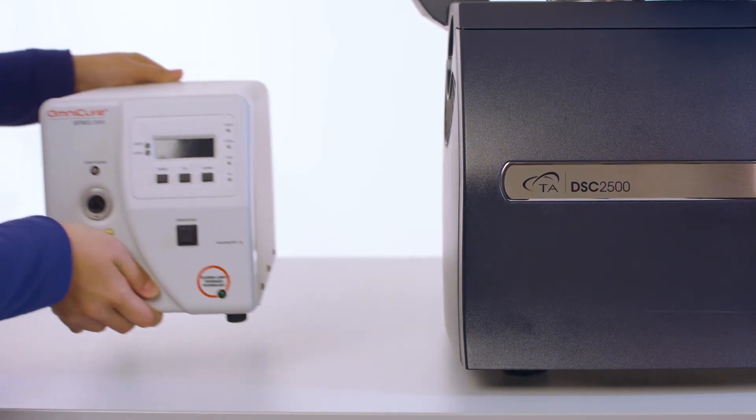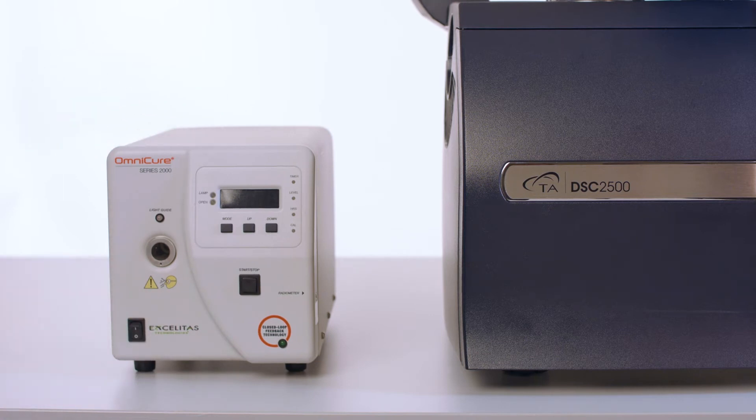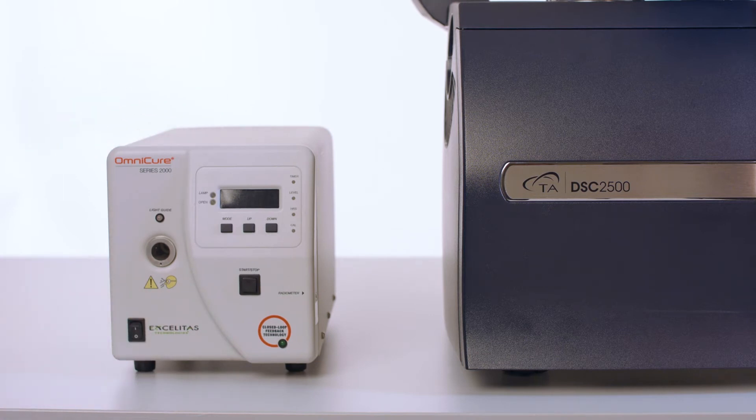Place the PCA unit on the lab bench next to the DSC. Be sure to position the PCA in a way that allows the light guide to be connected between the PCA unit and the cell without putting strain on the light guide.